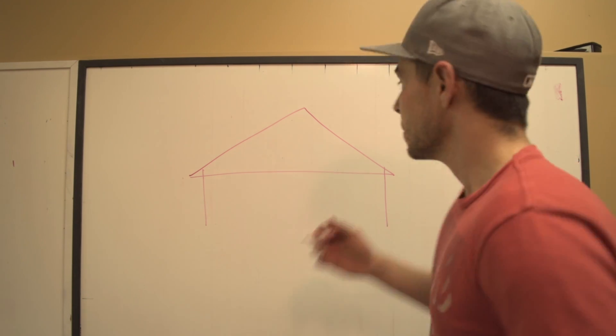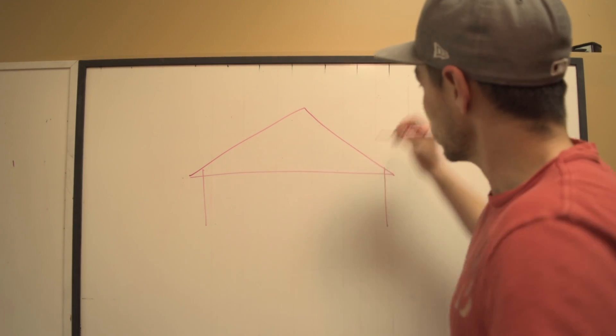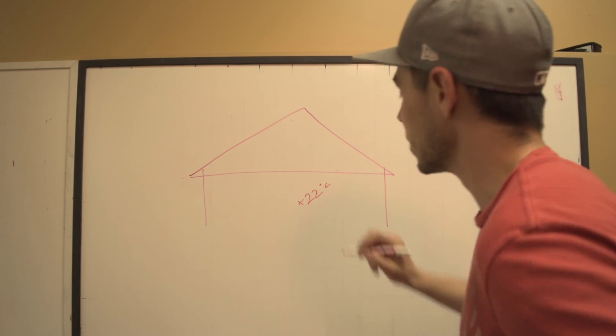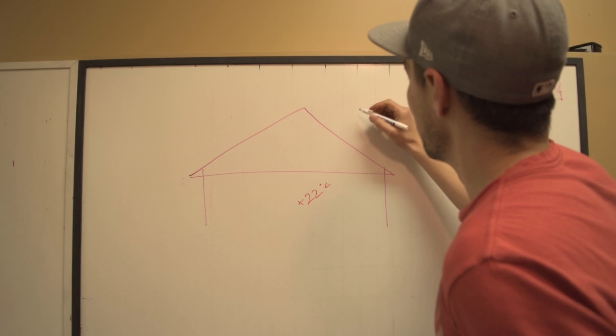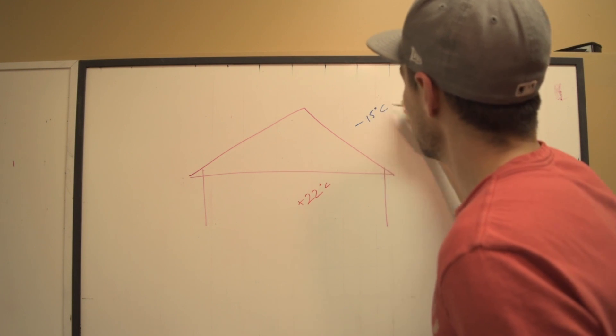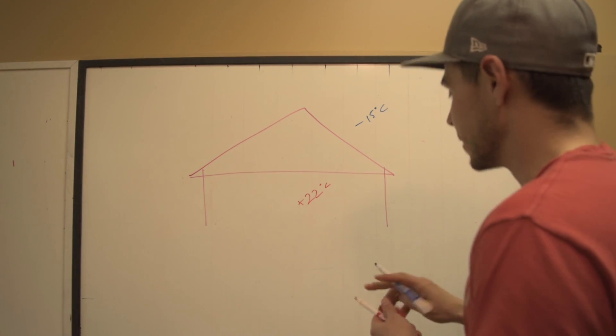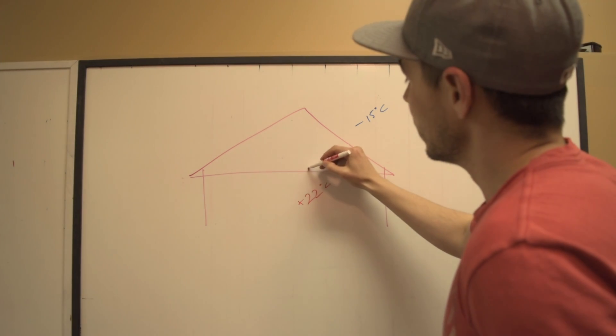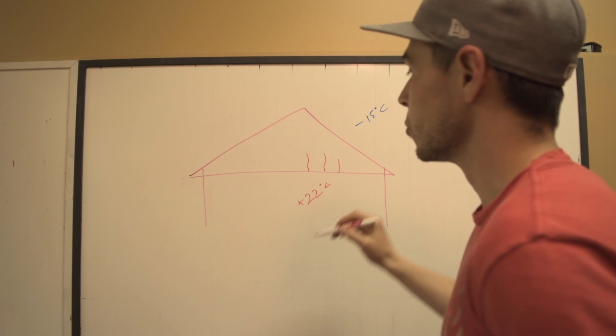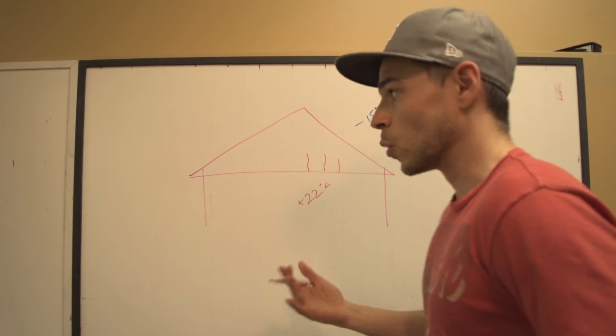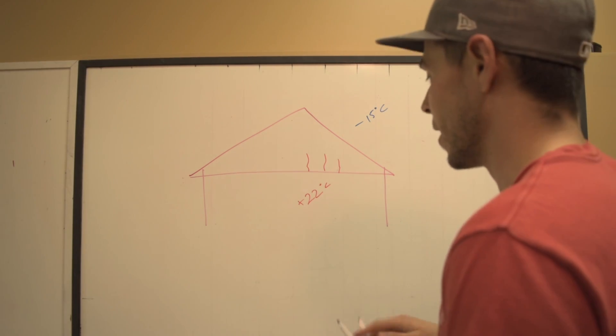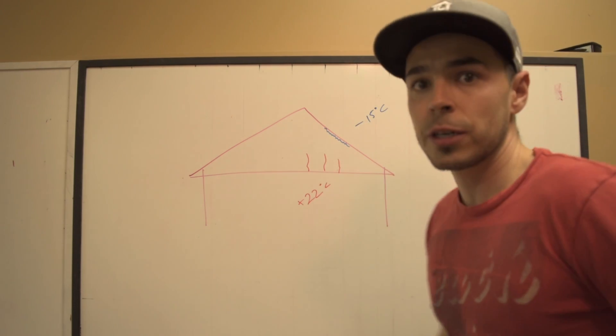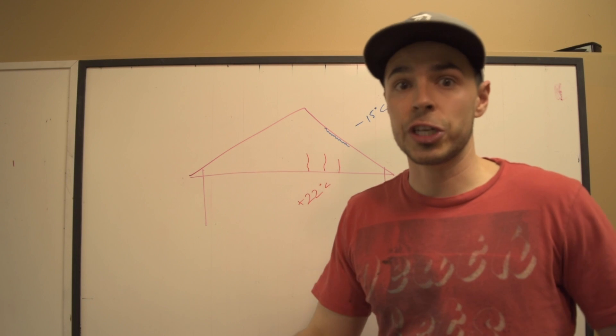So what happens when that happens? Let's say that your house is plus 22 degrees Celsius and outside it's minus 15 Celsius. As it gets colder outside and heat escapes into the attic space, frost builds up under the roof deck or the sheeting.